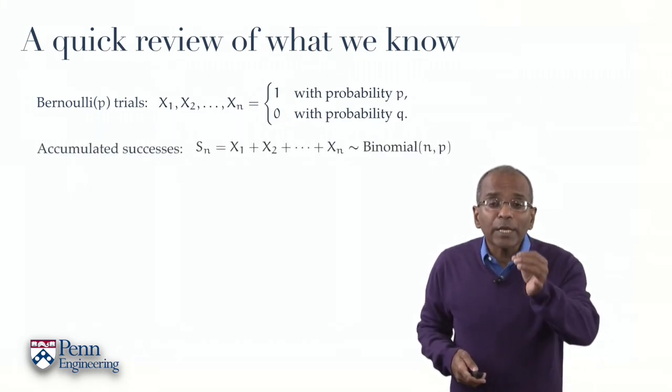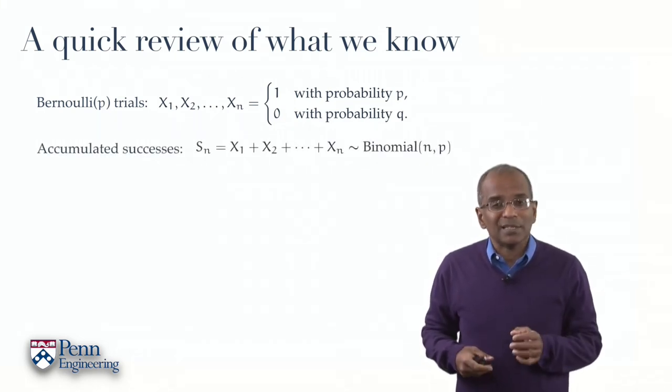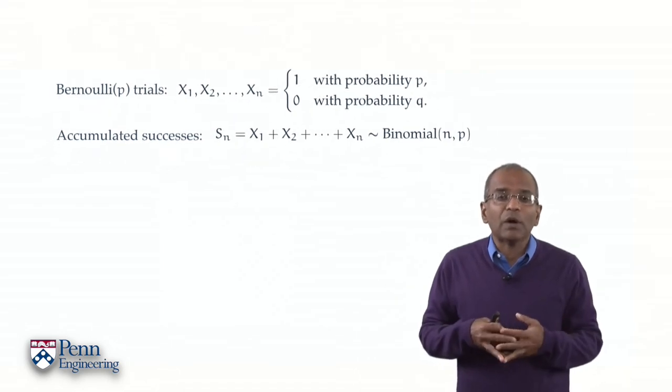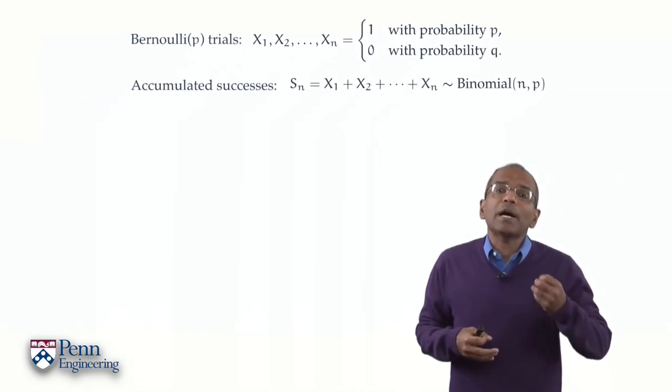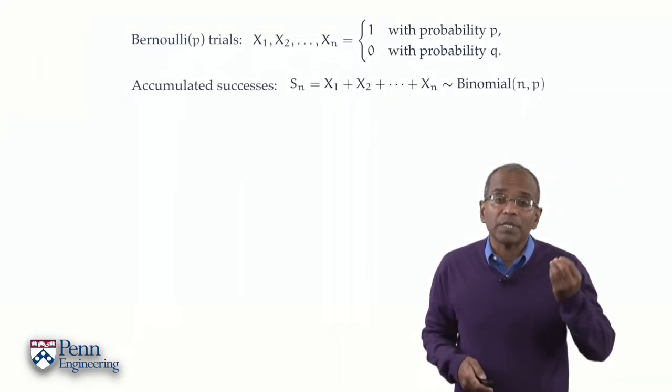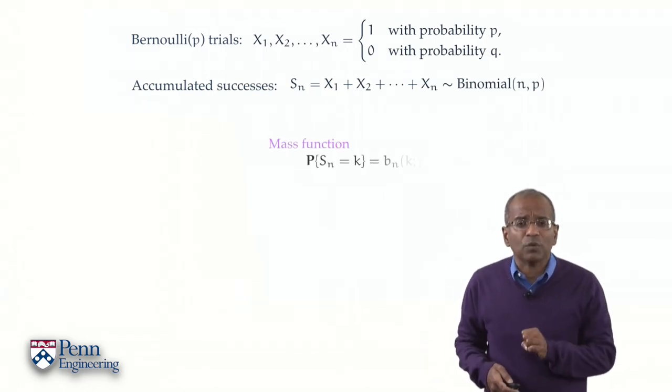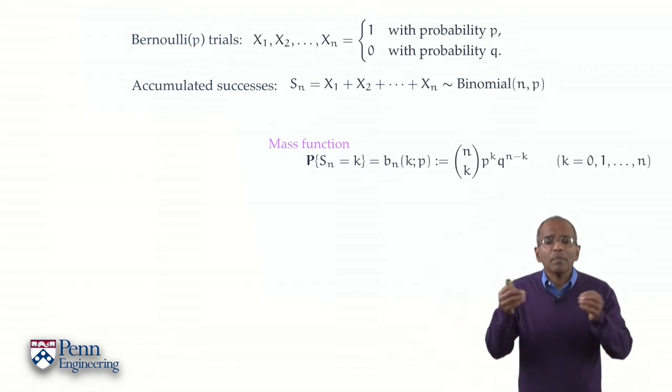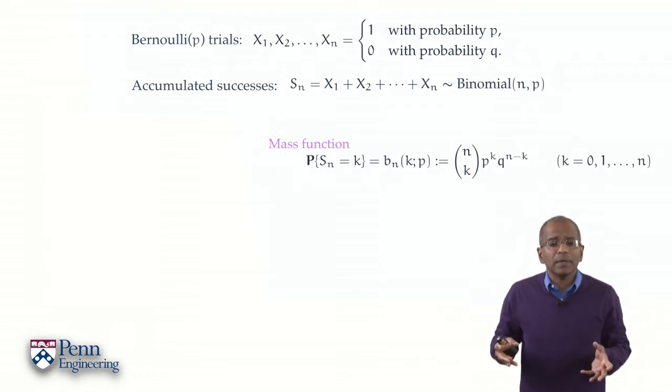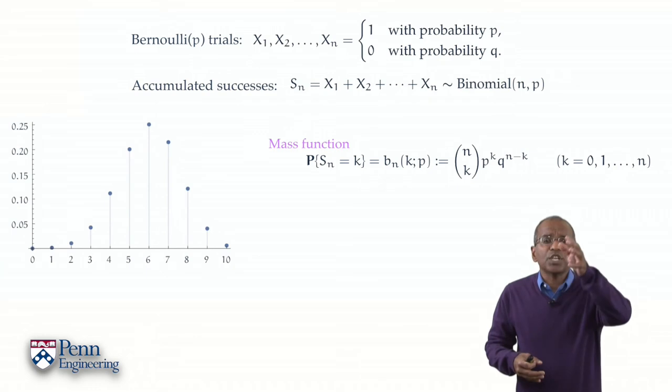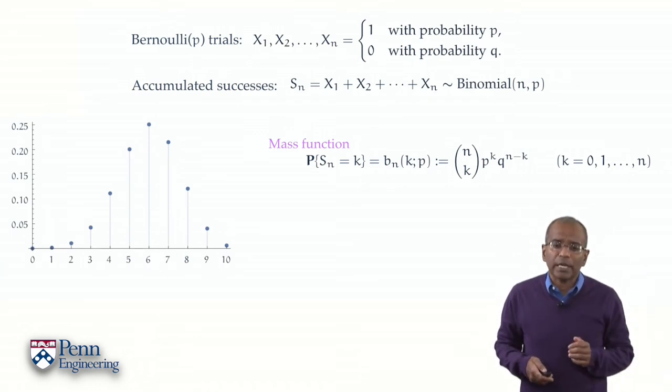We're going to form an accumulated number of successes. Of course, we call that S sub n. And we now know that S sub n has got a binomial distribution with parameters n and p. And now we know what the mass function for S sub n is. The atomic probabilities are given by the binomial probabilities. And we know exactly what the generic shape of the distribution looks like now.